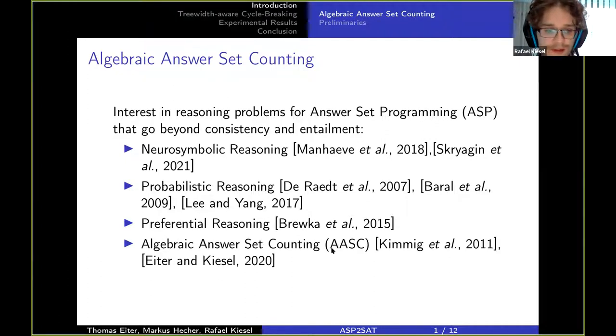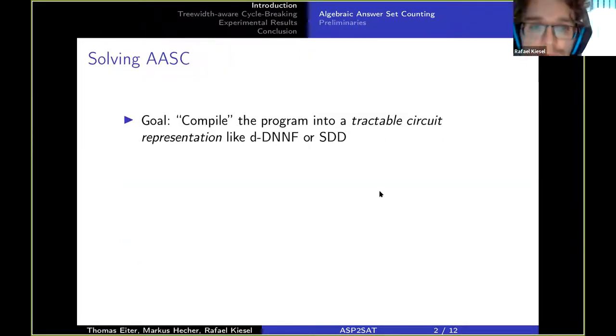Furthermore, often to this category of program falls preferential reasoning with for example weak constraints. To generalize the setting in a sense, we can look at algebraic answer set counting, meaning that we count the answer sets that are weighted with a weight from a semi-ring.